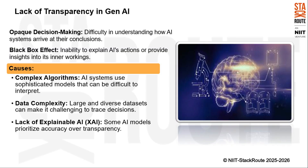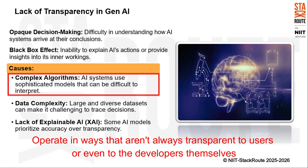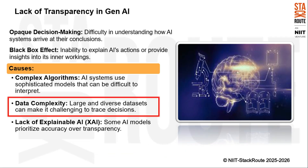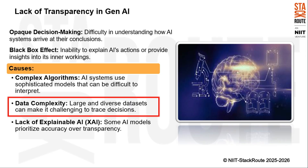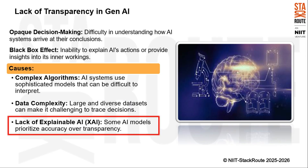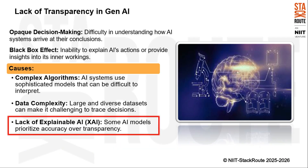The causes of these issues include: complex algorithms — AI systems often use sophisticated models that are difficult to interpret and operate in ways that aren't always transparent to users or even developers themselves; data complexity — AI systems process large and diverse datasets, making it challenging to trace how specific decisions are made; and lack of explainable AI (XAI) — some AI models are designed to prioritize accuracy and performance over transparency, making very accurate predictions but in ways that are not easily explainable to humans.